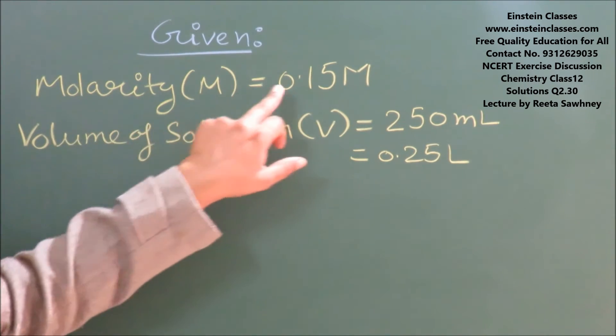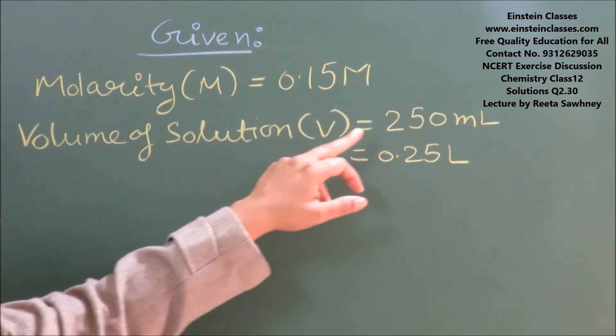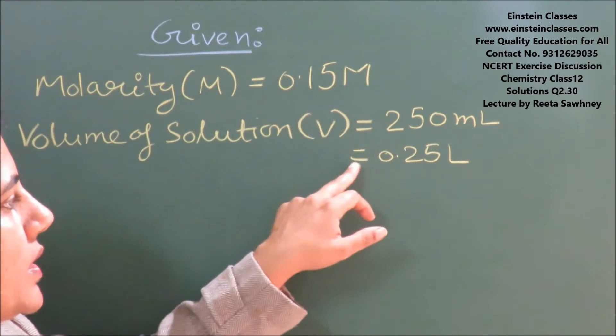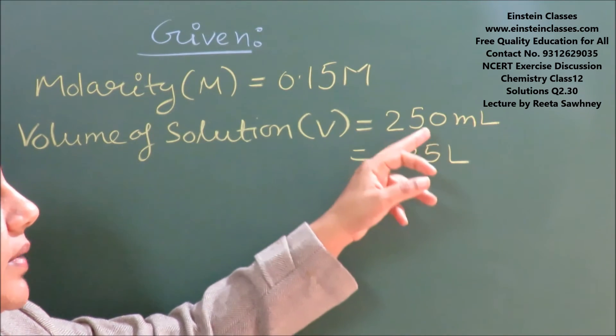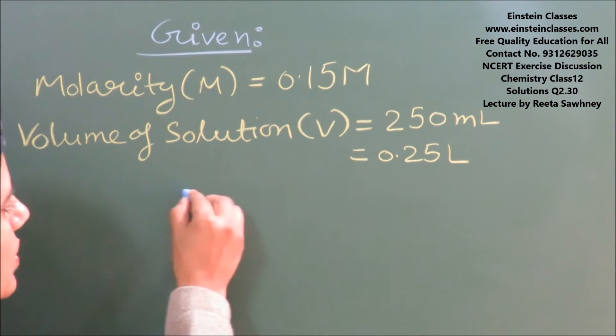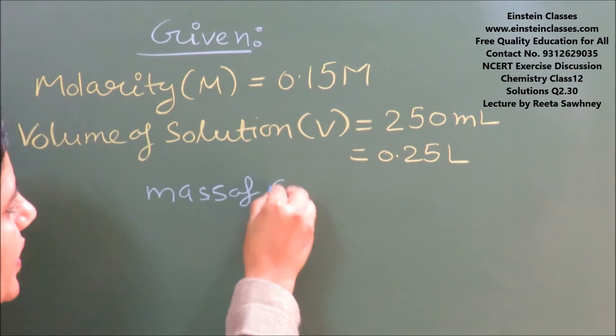Molarity of the solution is 0.15 and the volume of solution given to us is 250 ml, which is 0.25 liter. We can change ml to liter by dividing by 1000. Our aim is to find out the mass of solute, that is mass of benzoic acid.